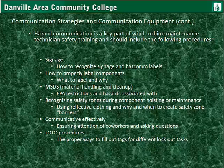Hazard communication is a key part of wind turbine maintenance technician safety training and should include: signage — how to recognize signage and hazard communication labels; how to properly label components, what to label, and why; material safety data sheets covering material handling, use, and proper cleanup, which is an EPA requirement; recognizing safety zones during component hoisting or maintenance; using reflective clothing and knowing when to create safety zone barriers; communicating effectively to ensure the attention of coworkers; and lockout-tagout procedures — knowing the proper way to fill out tags for different lockout tasks.